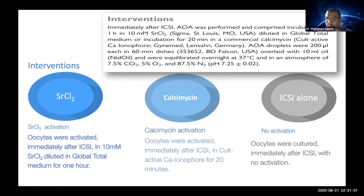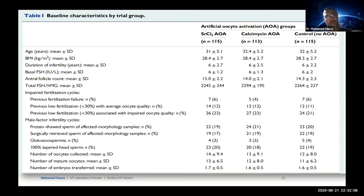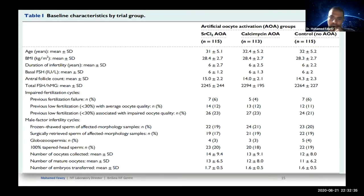Our intervention was the use of strontium chloride, calcium ionophore, or ICSI alone. Baseline cycle characteristics were comparable except for the number of mature oocytes, which was incorrectly reported in the original analysis — the corrected values are 12, 11, and 10.5 respectively — but this has no effect on the overall conclusion.